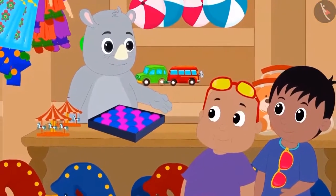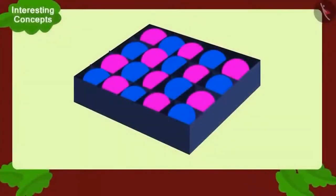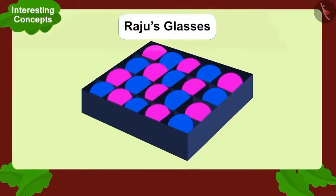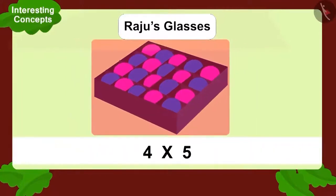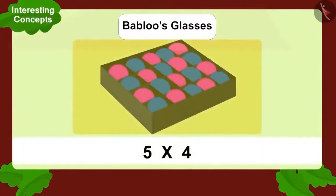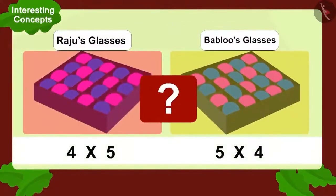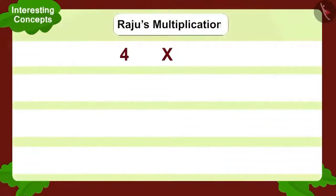First, Raju and Bablu arrived at Gaggu Rhino's toy shop. There is a box of balls with four vertical and five horizontal compartments. Raju wore his glasses and saw one multiplication. Now Bablu wore his glasses and saw another multiplication. Is this possible? Is the multiplication seen through Bablu's and Raju's glasses the same? Let's look at Raju's multiplication. Raju saw five horizontal compartments and four balls in each compartment — four multiplied by five.